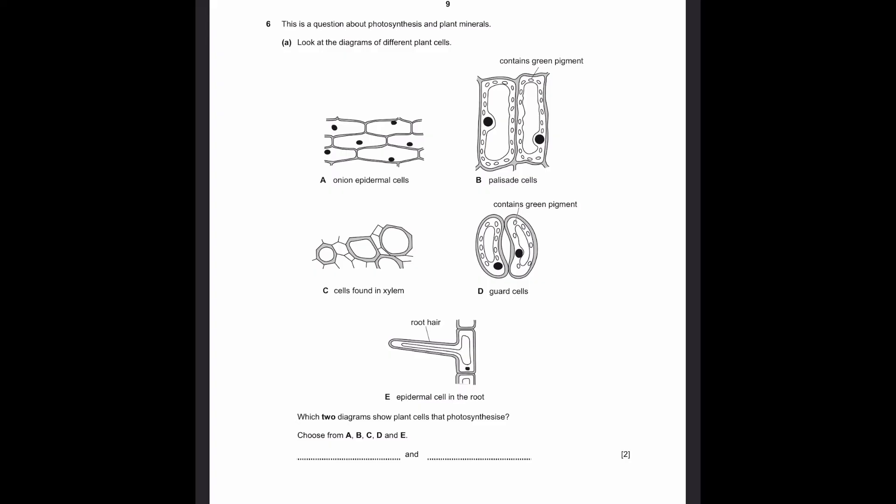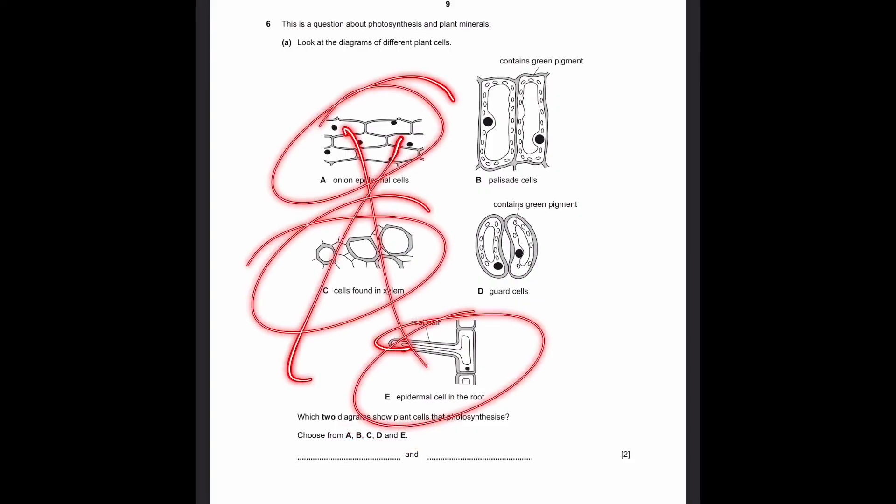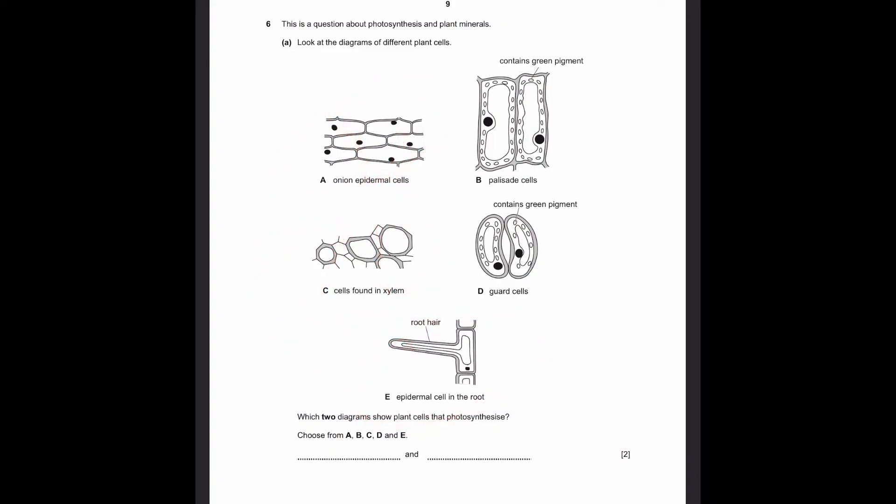Let's go to question 6. This is a question about photosynthesis and plant minerals. Part A: Look at the diagrams of different plant cells. Which two diagrams show plant cells that photosynthesize? Choose from A, B, C, D, and E. A, C, and E do not have any chlorophyll, do not have any green pigment, and do not have chloroplasts. But then, cell B and cell D, or palisade cells and guard cells, they have chloroplasts. These small blobs here have a green pigment, which is chlorophyll. Therefore, they can photosynthesize. So, B and D are the answers.